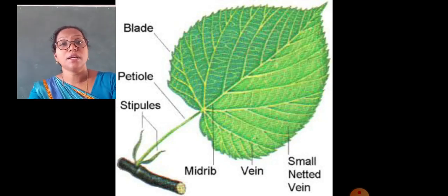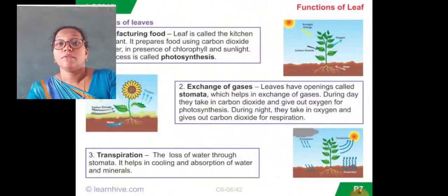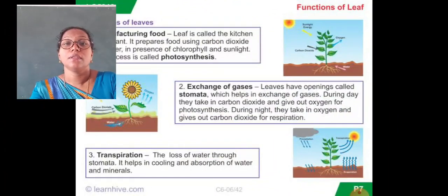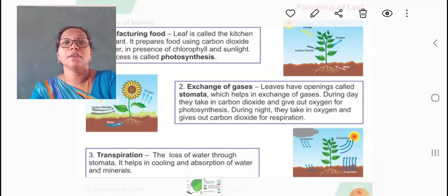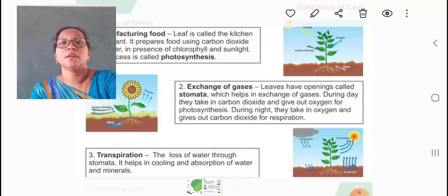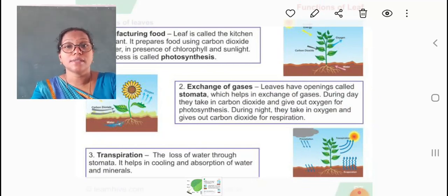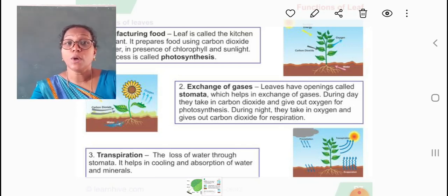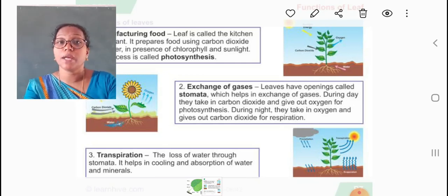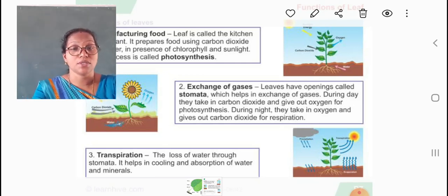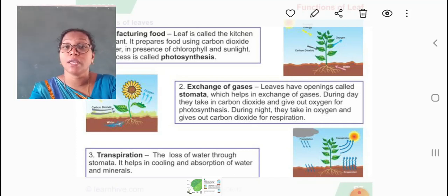Now children, what are the functions of leaves? The leaves have different functions: they are manufacturing food, exchanging gases, and transpiration. The leaf is called the kitchen of the plant because it prepares food for the plant. The prepared food is stored in various parts of the plant. In some plants, the food is stored in the leaves itself.